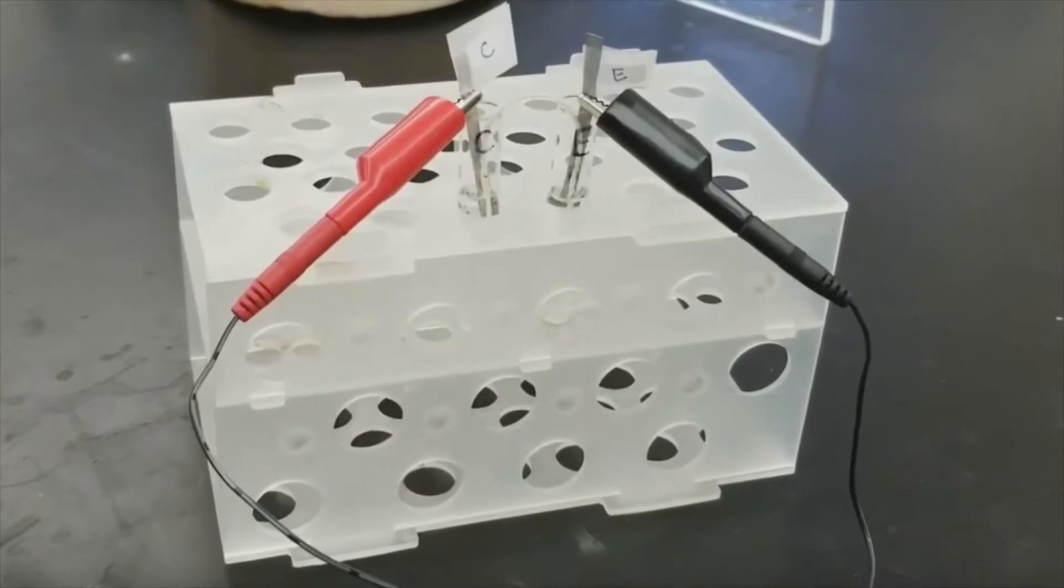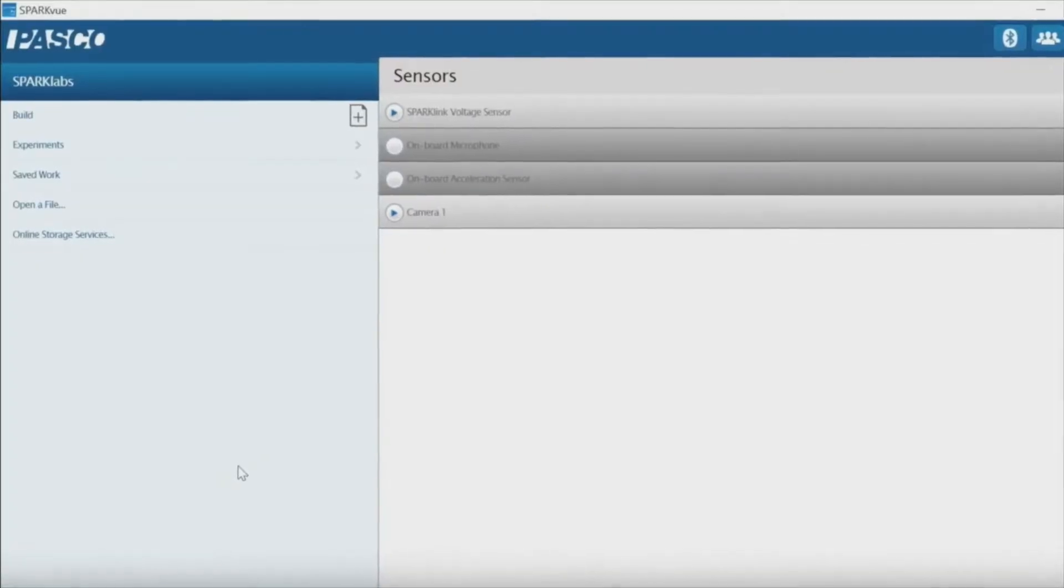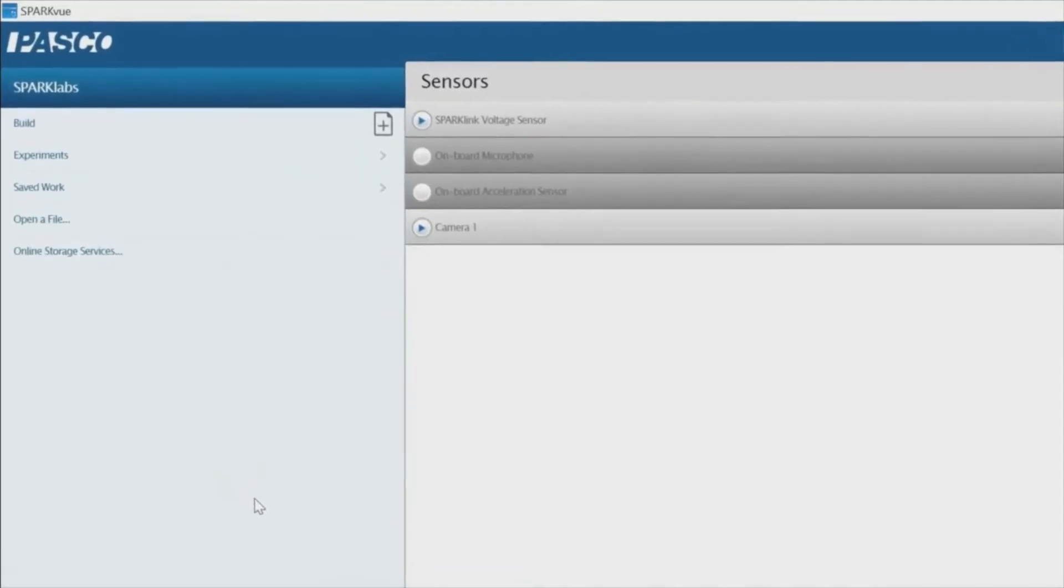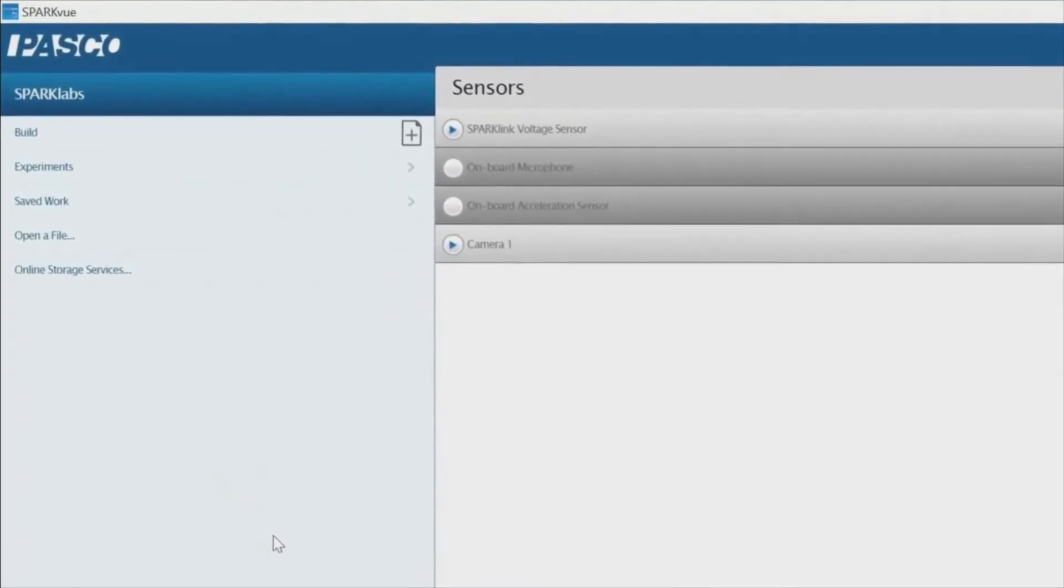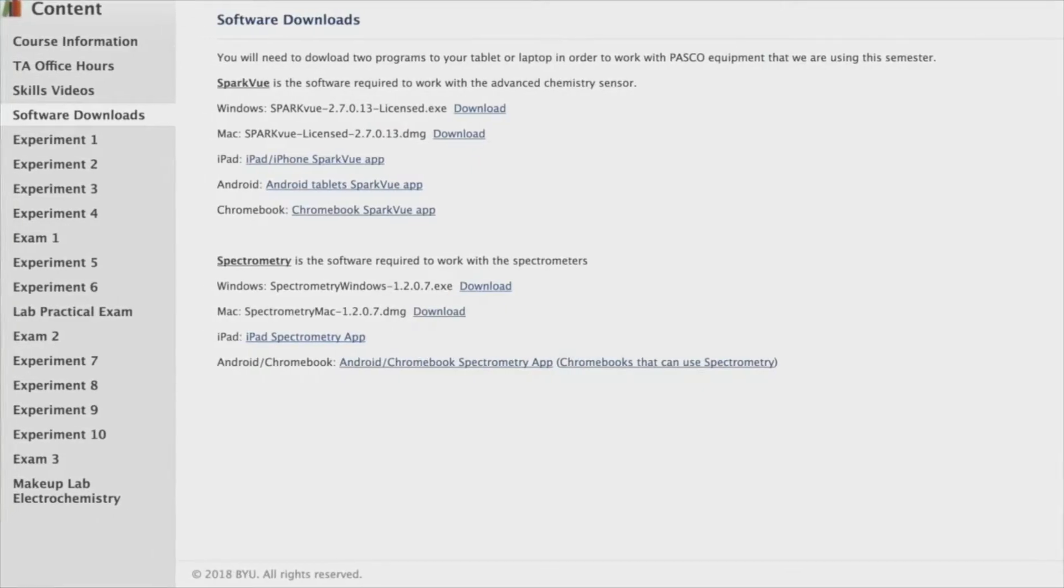For part one of the experiment, you'll need to successfully assemble an electrochemical cell. You'll be using the PASCO SparkView software to measure the voltage of the cells that you'll create. If you haven't yet done so, download the PASCO software that can be found on Learning Suite.